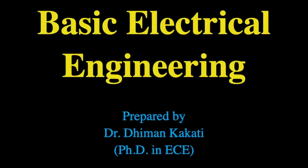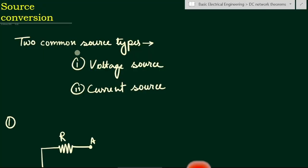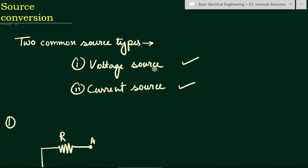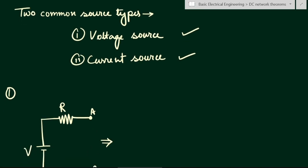Hello everyone, this is Dr. Dhiman, and in this video we will learn about source conversion. We commonly use two types of sources: the voltage source and the current source. We can convert a voltage source into a current source equivalent, and vice versa. That is, we can convert a voltage source with series resistance to a current source with parallel resistance, and we can convert a current source with parallel resistance to a voltage source with series resistance. So there may be four types.